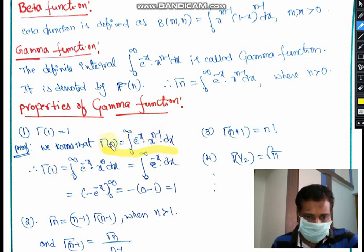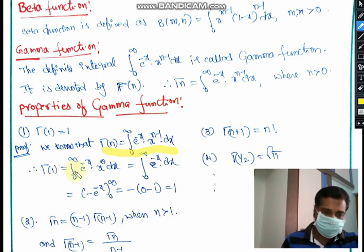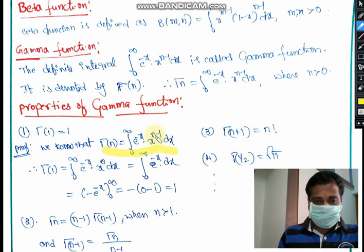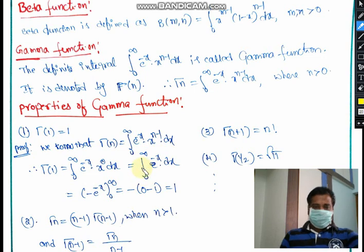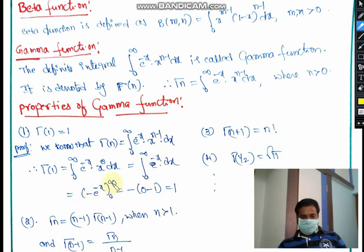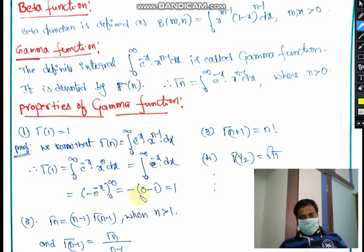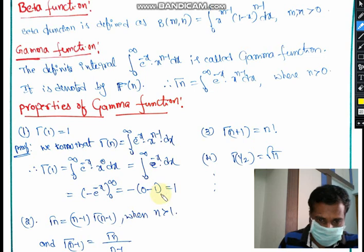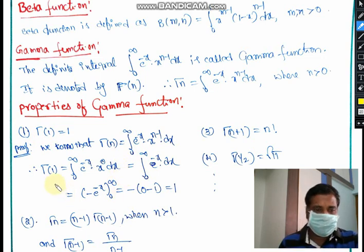To prove Γ(1) = 1, put n = 1: Γ(1) = ∫₀^∞ e^(−x) · x^(1−1) dx = ∫₀^∞ e^(−x) dx. Integrating: [−e^(−x)]₀^∞. At the upper limit, e^(−∞) = 1/e^∞ = 0; at the lower limit, e^0 = 1. So we get −(0 − 1) = 1. Hence Γ(1) = 1.